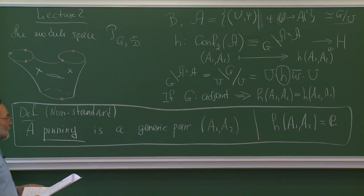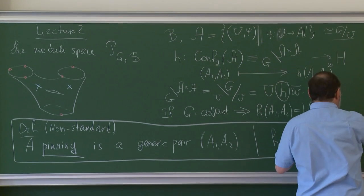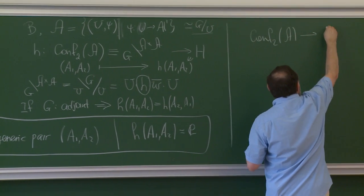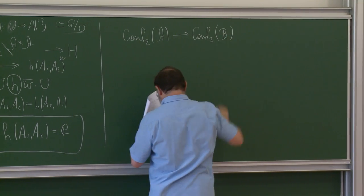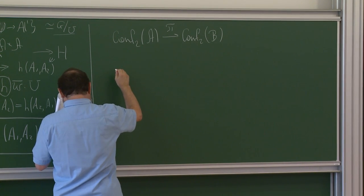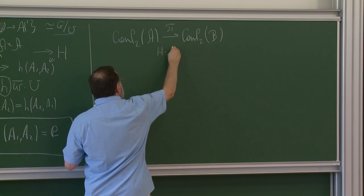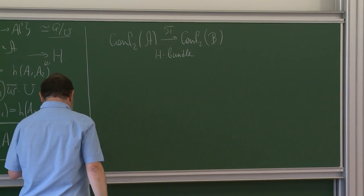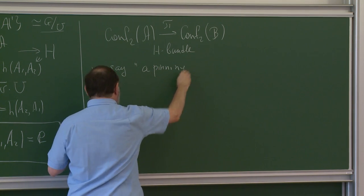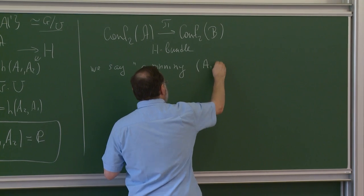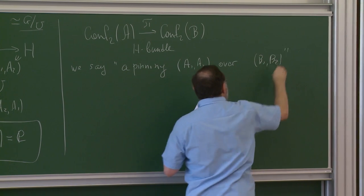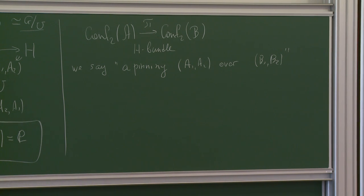We have a natural projection from the configuration of two decorated flags to configurations of two flags — this is a canonical projection pi. We say a pinning A1, A2 lies over a pair of flags B1, B2, where B1, B2 is the pair obtained from A1, A2 by this projection.